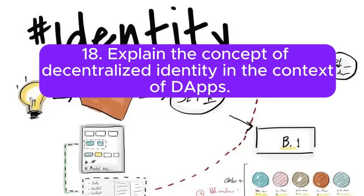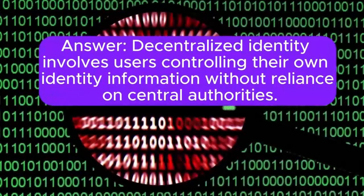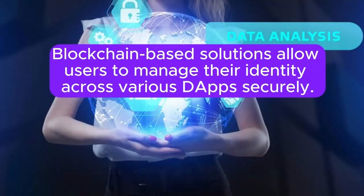18. Explain the concept of decentralized identity in the context of DApps. Answer: Decentralized identity involves users controlling their own identity information without reliance on central authorities. Blockchain-based solutions allow users to manage their identity across various DApps securely.